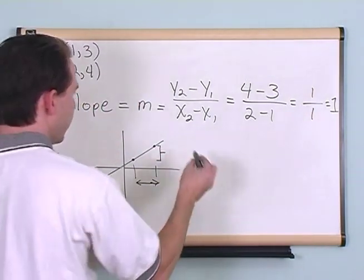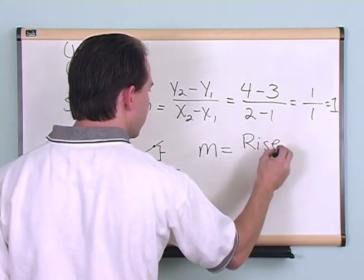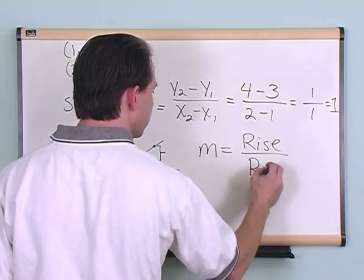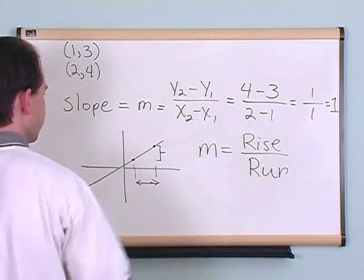Another really convenient way to remember this formula, m, is equal to rise over run. How fast does the line go up? Rise. How fast does it go over to run?